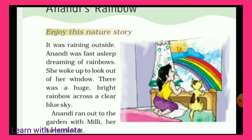It was raining outside. Bahaar bahaat tej baarish ho rahi thi. Anandi was fast asleep, dreaming of rainbows. Fast asleep means jo bahaat geheri neend mein soya rahata hai — very deep sleeping. Jab Anandi so rahi thi, to woh kya dekh rahi thi? Rainbows ki sapne dekh rahi thi.